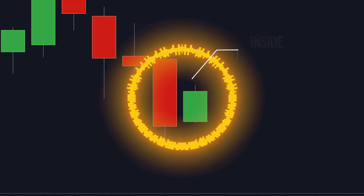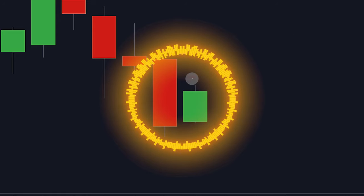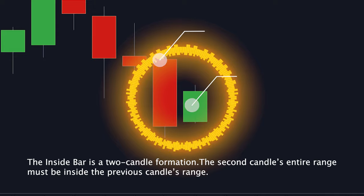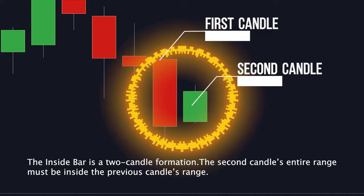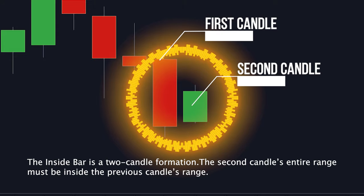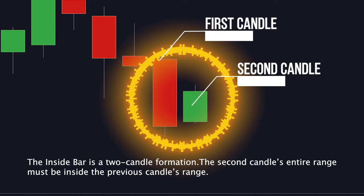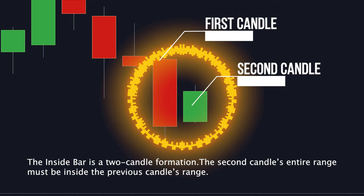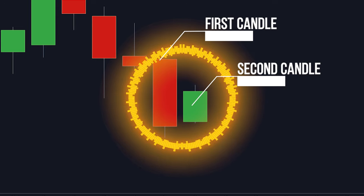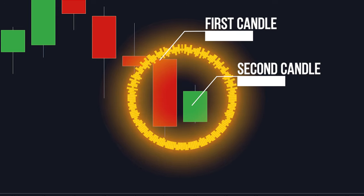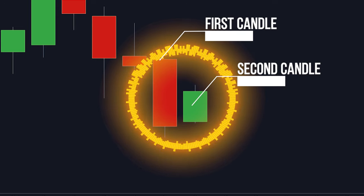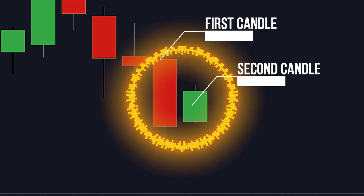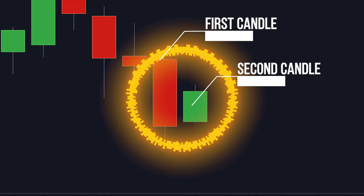What is the inside bar pattern? The inside bar is a two-candle formation. The second candle's entire range must be inside the previous candle's range. As you can see in the chart example, the high and low of the second candle must completely fit within the range of the previous candle. This is a valid inside bar.